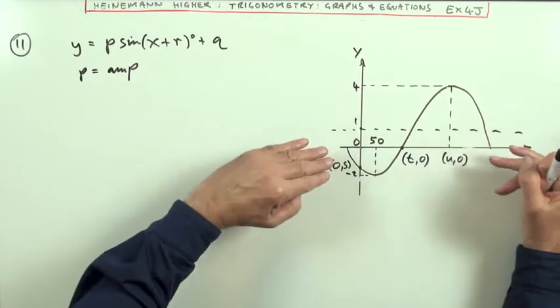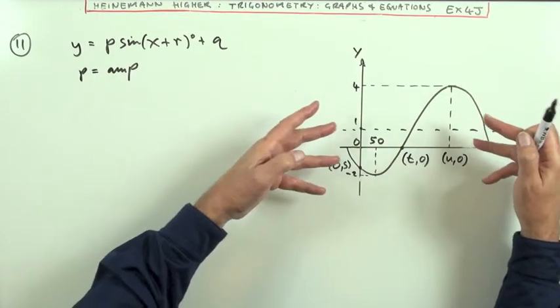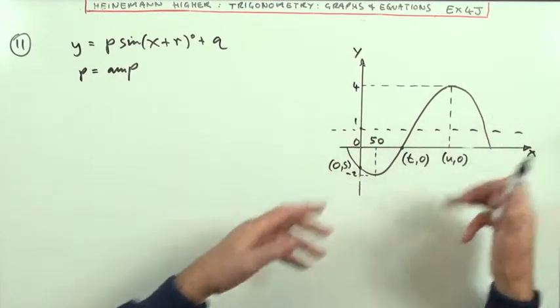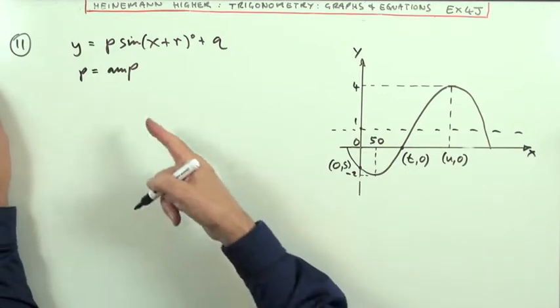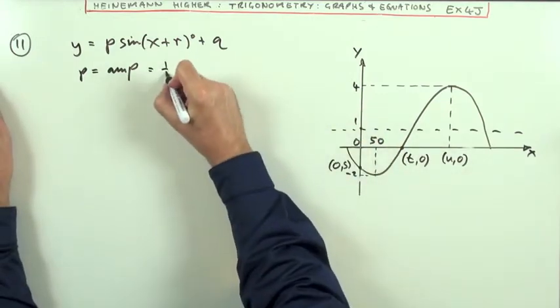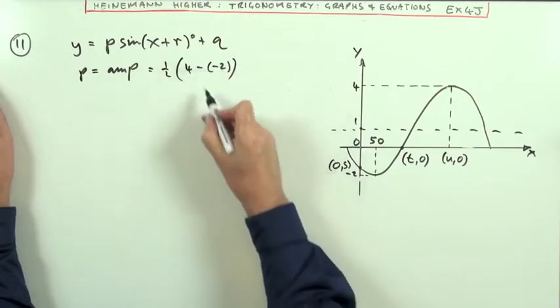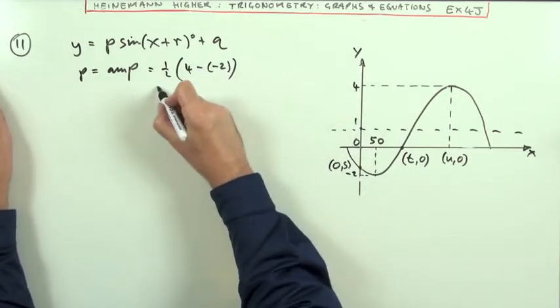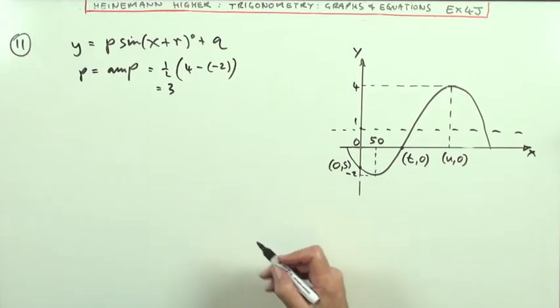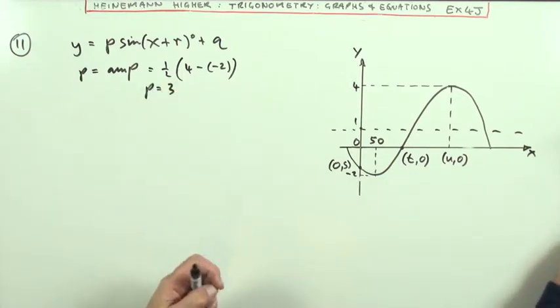Is that an upside down sine that's been shifted back a bit, or is it the ordinary sine that's going forward? I'll just take it as the sine going forward. So the amplitude's going to be half of the difference between the top and the bottom. 4 take away negative 2 is 6, which means P is going to equal 3. So that's the first bit. P equals 3.